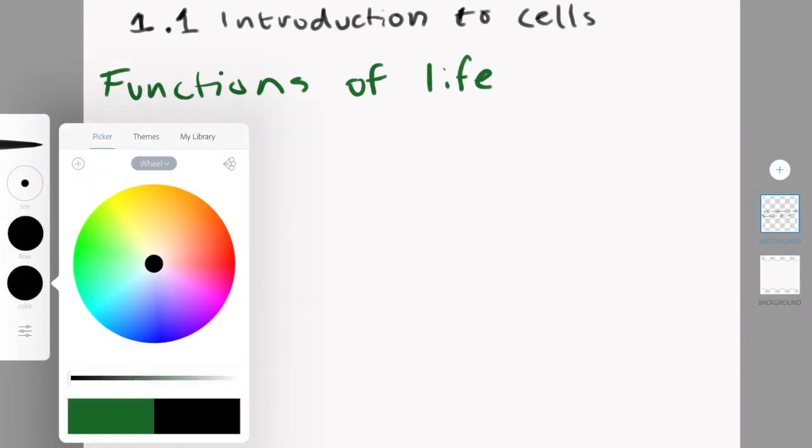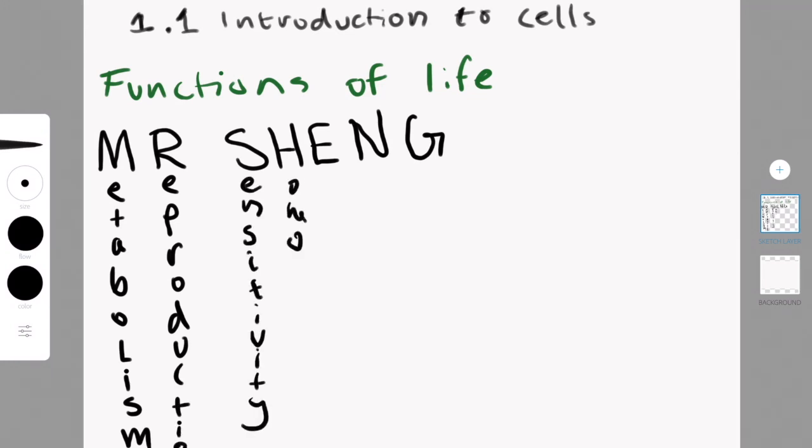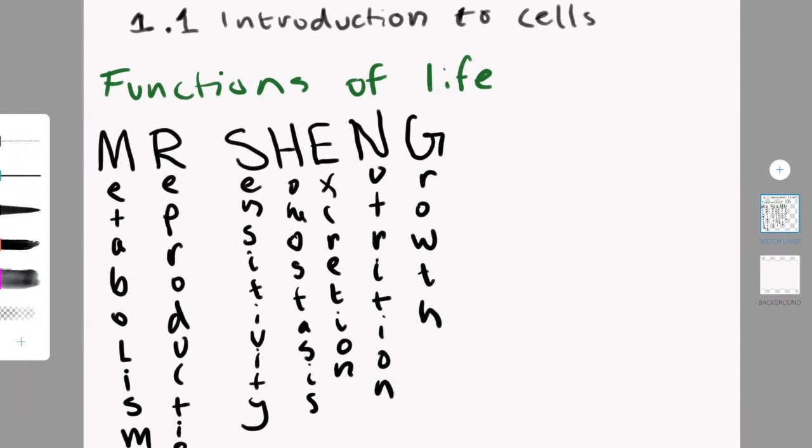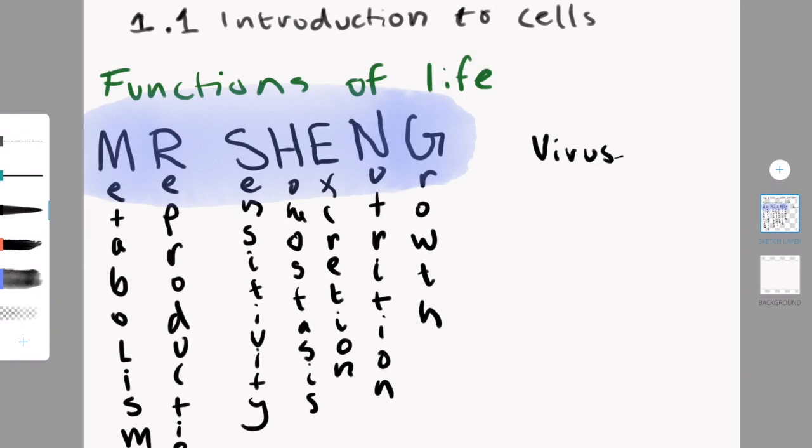An important thing about cells is that cells are living, and the reason why we consider cells to be living is because they carry out all the functions of life. The functions of life are metabolism, reproduction, sensitivity, homeostasis, excretion, nutrition, and growth. My teacher told us this acronym, which was Mr. Sheng, and that's how we remember that those are the functions of life. So just think, every time if you get a question on the test, what are the functions of life, just think Mr. Sheng.